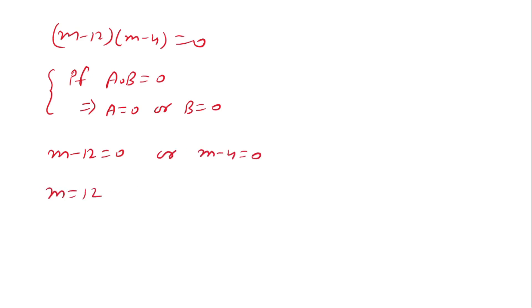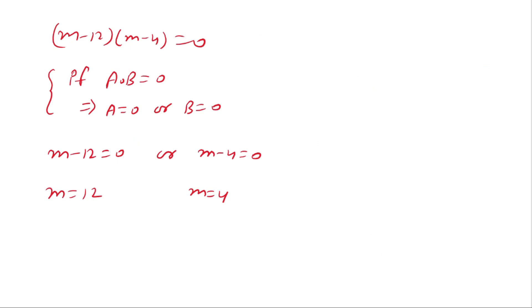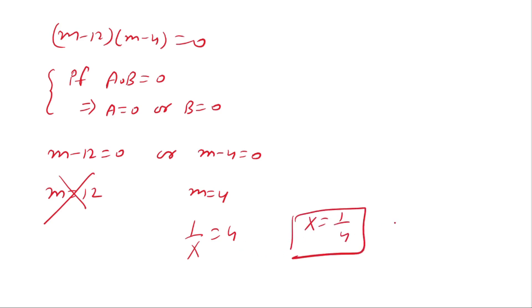Then the value of m is 12 or m is 4. But we established that m must be less than or equal to 7, so m equals 12 is rejected. Therefore m equals 4. Recalling that m equals 1 over x, and since 1 over x equals 4, taking the reciprocal of both sides gives x equals 1 over 4. This is our final answer.